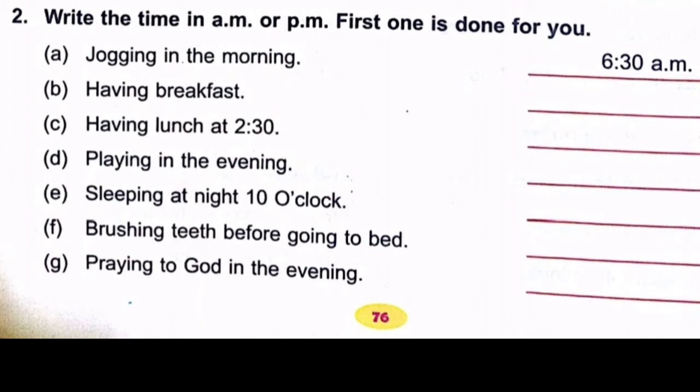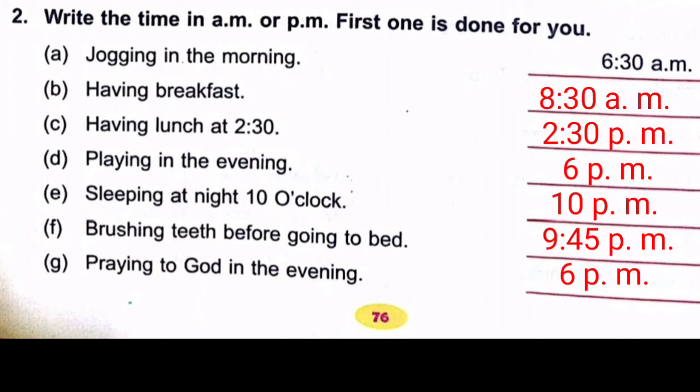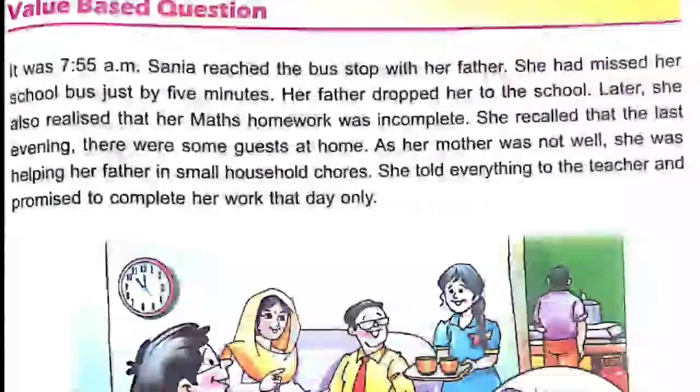Fill in AM or PM for daily activities: Having breakfast at 8:30 — that is AM. Having lunch at 2:30 — that is PM. Everything in the afternoon and evening is PM. Praying in the evening should be PM. Praying to God in the morning should be AM.